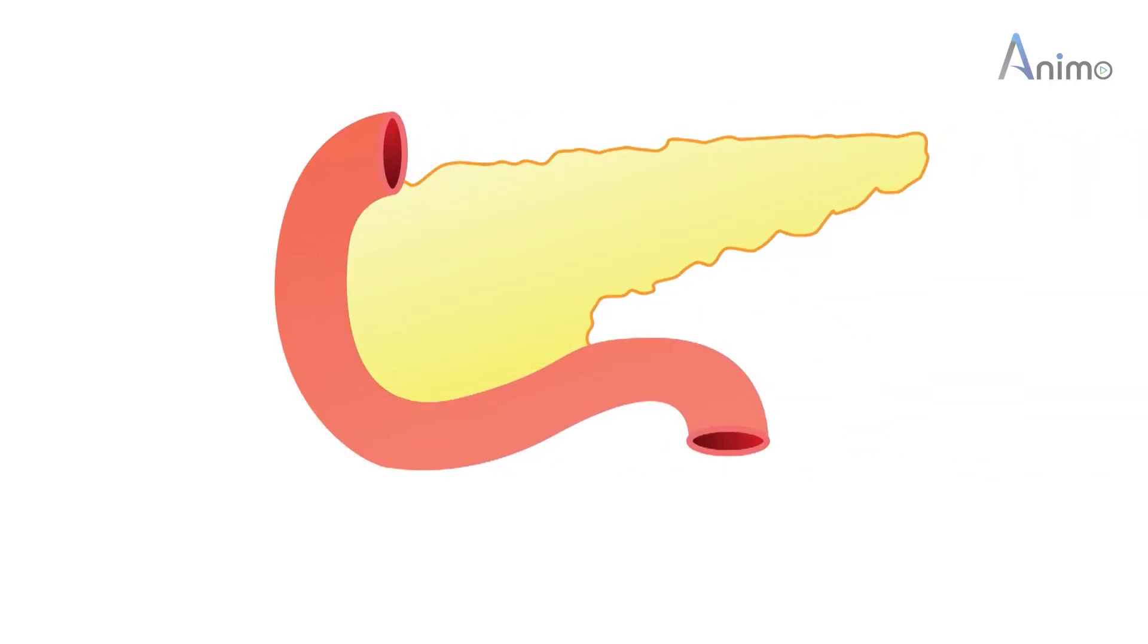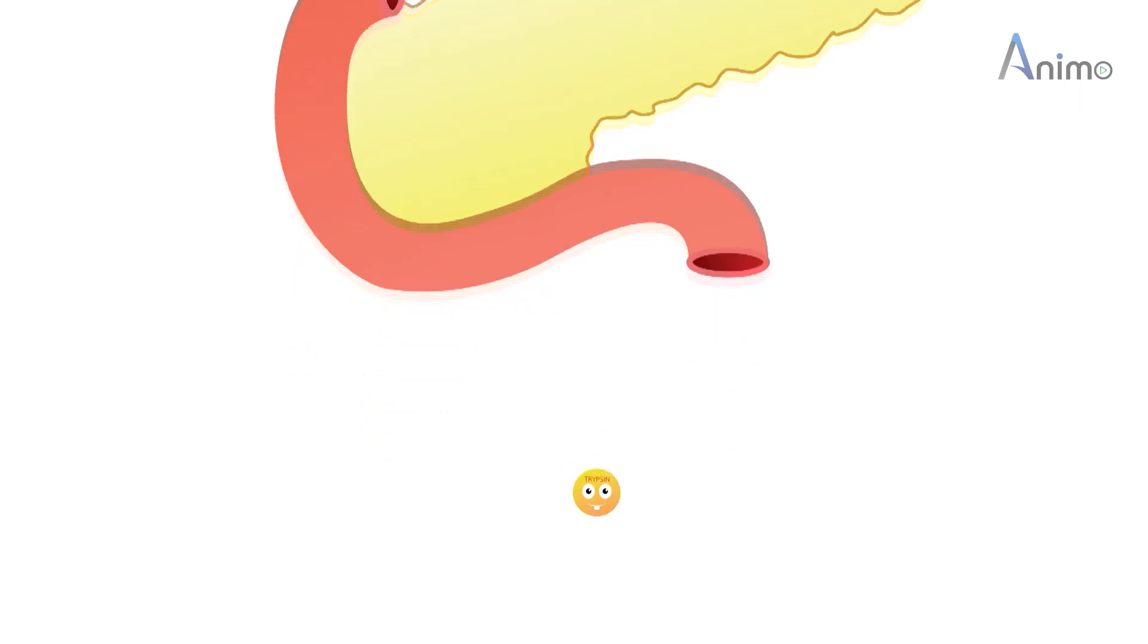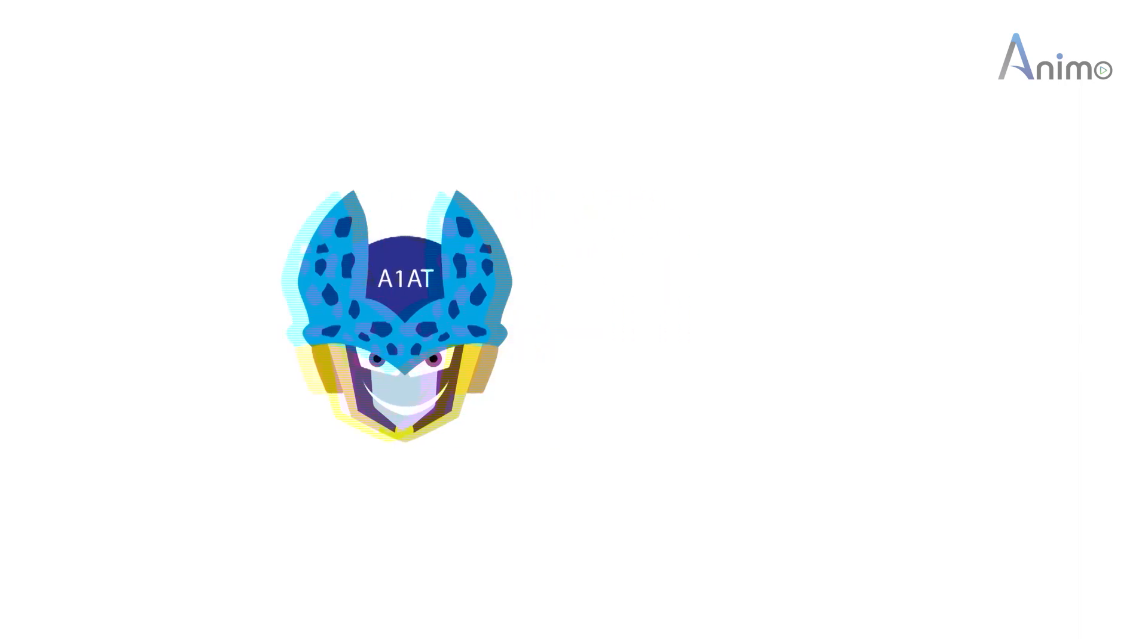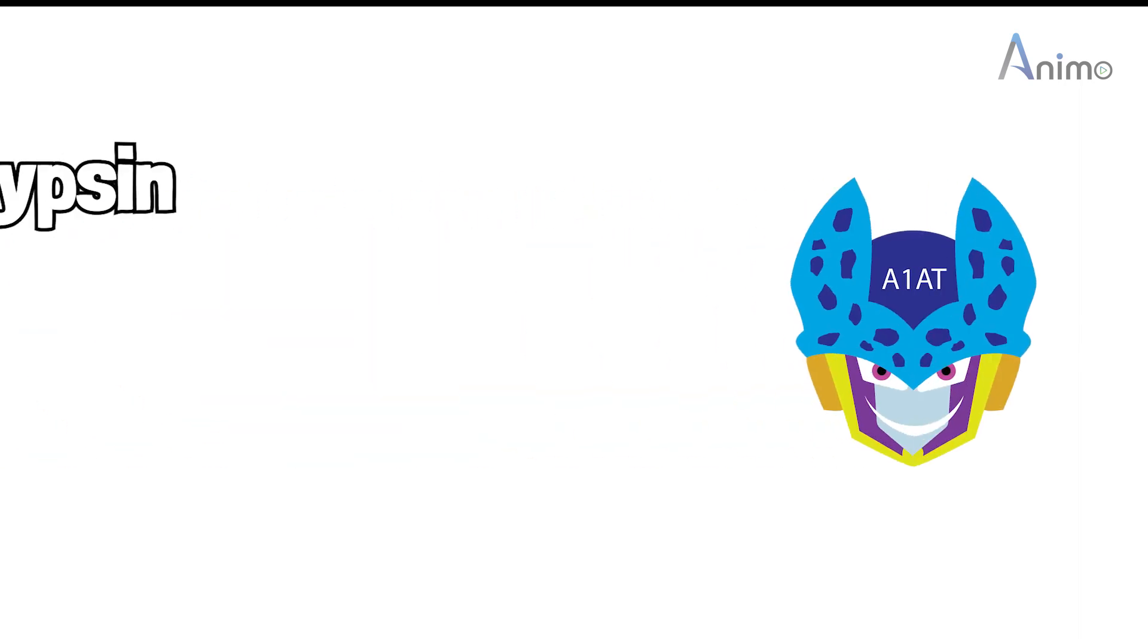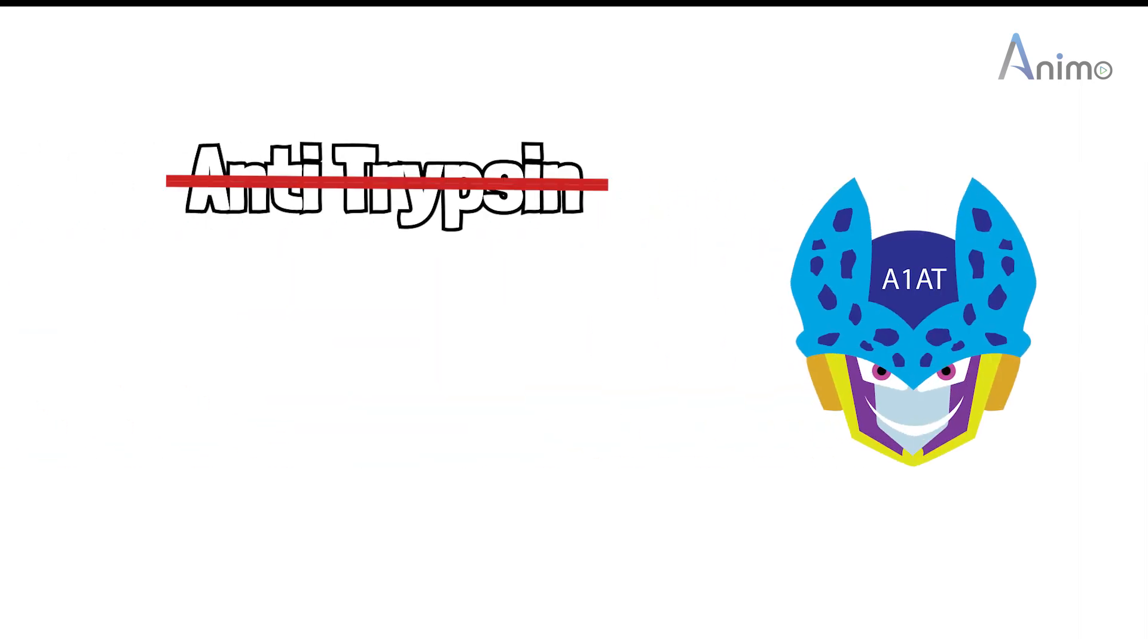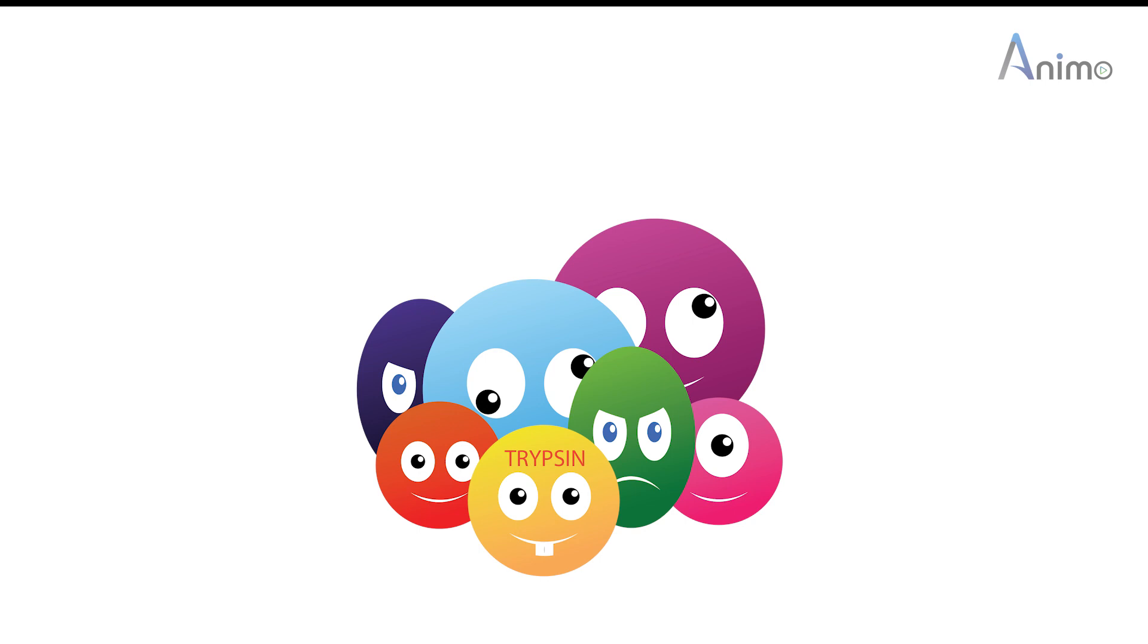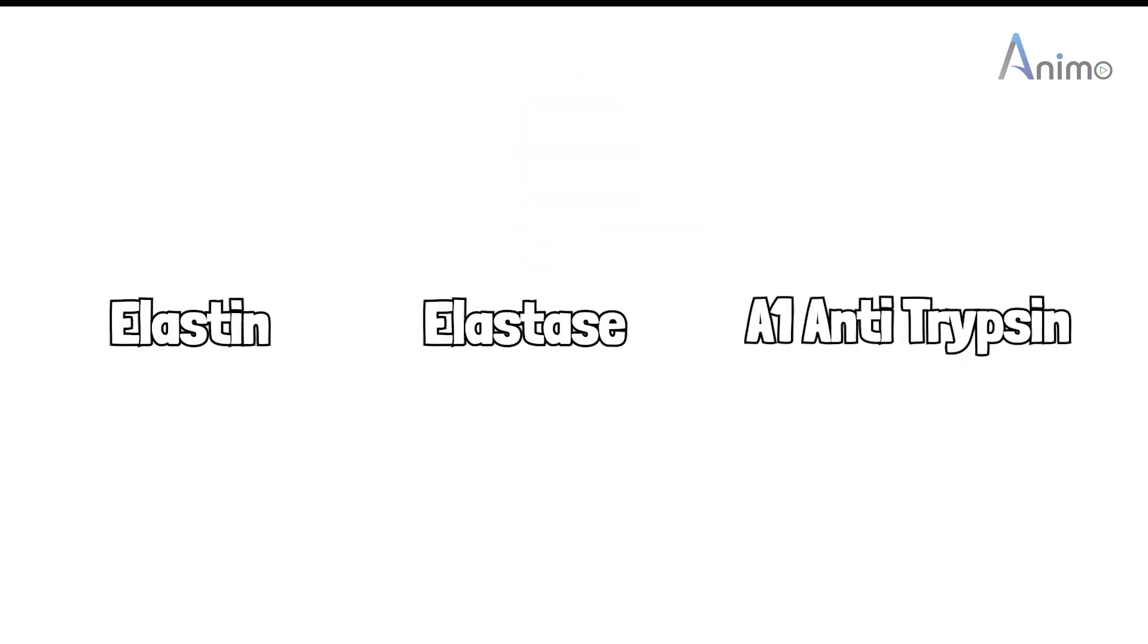It is called alpha-1 antitrypsin so that it destroys the pancreatic enzyme trypsin. That is why it is antitrypsin. But nowadays its name is changed. It is now called alpha-1 antiproteinase. Because it breaks not only trypsin but also different proteolytic enzymes of our body. And among these different proteolytic enzymes, there is also elastase. It means it breaks elastase, the elastin destroyer.